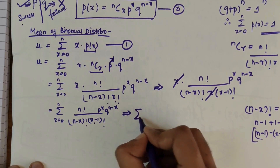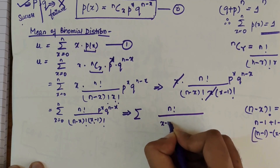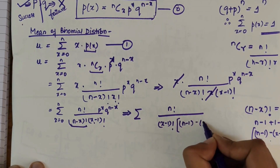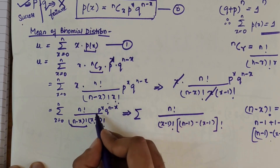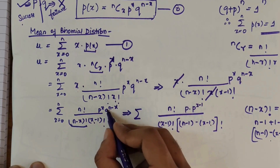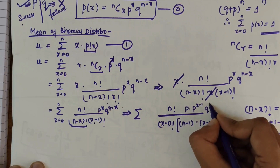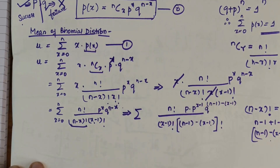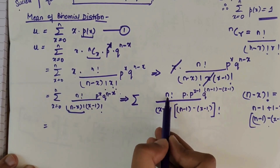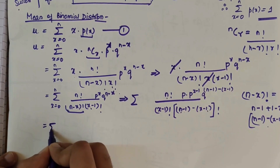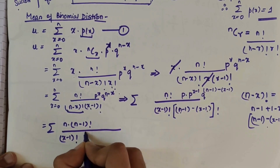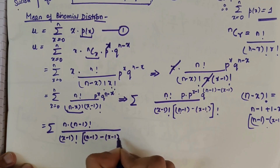We rewrite the summation with (X-1) factorial in the denominator, and expand (N minus X) as (N-1) minus (X-1) factorial. P^X is written as P times P^(X-1) and Q^(N-X) becomes Q^(N-1-(X-1)). Taking N factorial as N times (N-1) factorial, we then have N times (N-1) factorial over (X-1) factorial times (N-1 minus (X-1)) factorial.